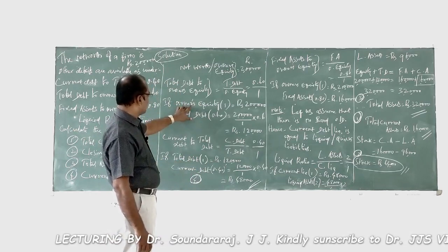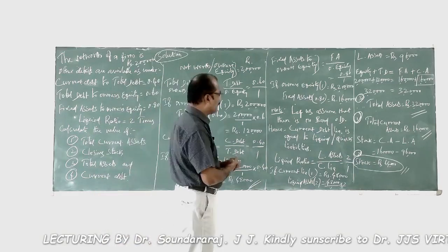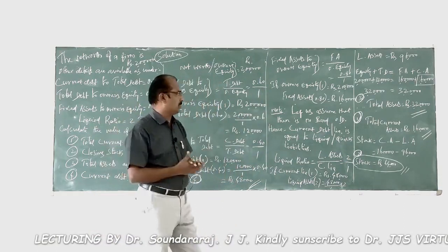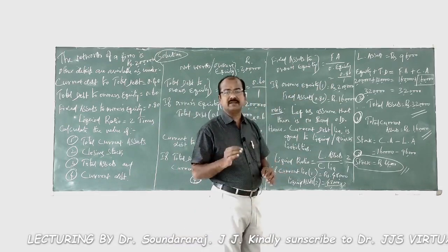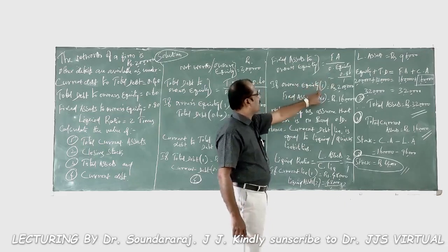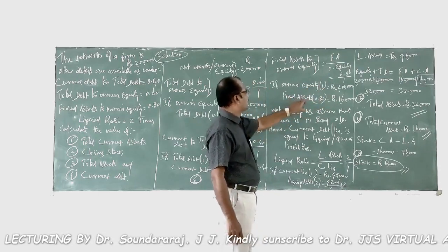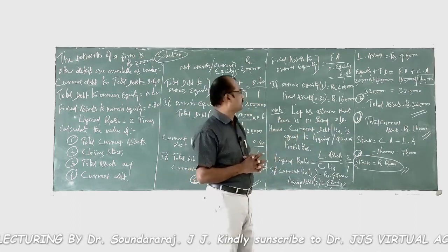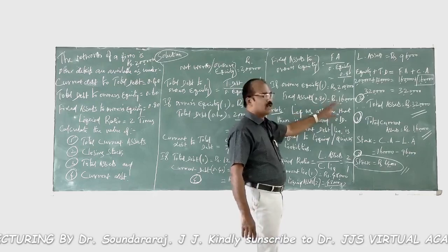So far we know current debt, total debt, and owner's equity. Now, fixed assets to owner's equity = 0.8 to 1. Owner's equity with weight 1 equals 2 lakhs, so fixed assets with weight 0.80 equals 2 lakhs divided by 1, multiplied by 0.80 = rupees 1 lakh 60,000.